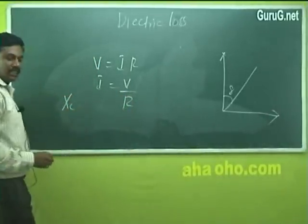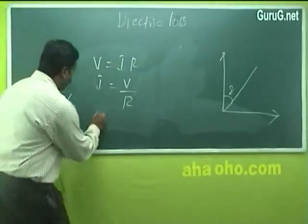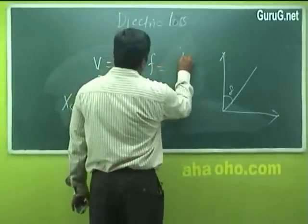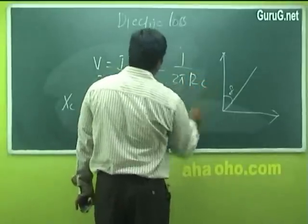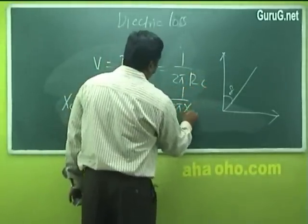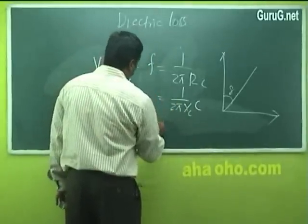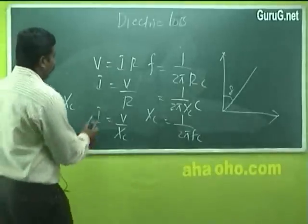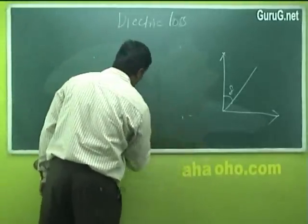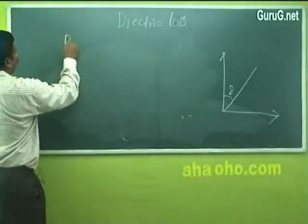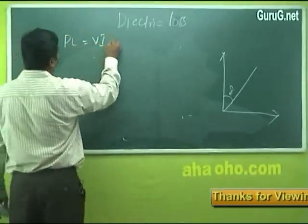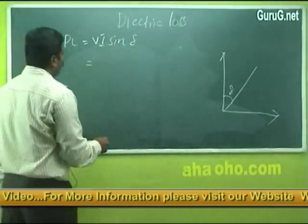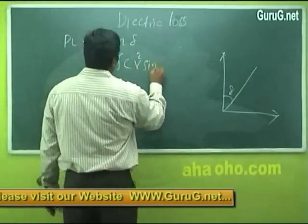If Xc is the reactance of the capacitor, then I = V/Xc. We know frequency F = 1/(2πXcC), so Xc = 1/(2πFC). Substituting into the power loss equation PL = VI sinδ, we get: PL = 2πFV²C sinδ.